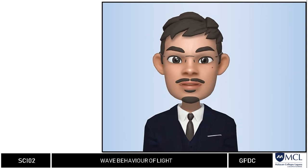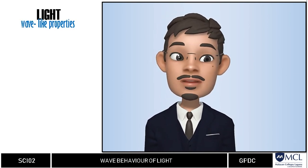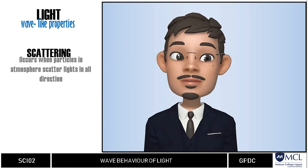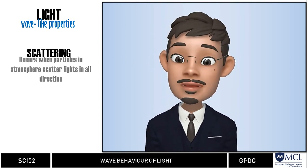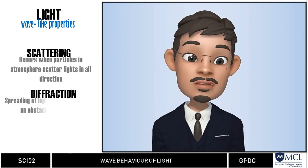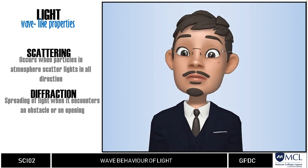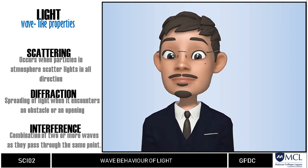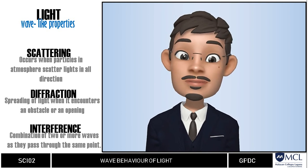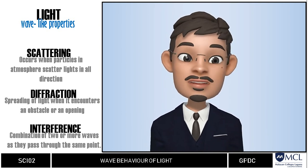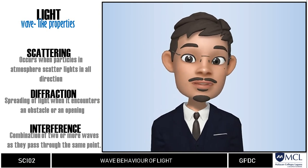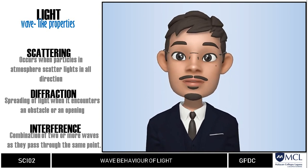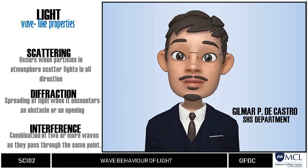To sum up this video, we know that there are three behaviors of light that suggest its wave-like property. We have scattering, which occurs when particles such as those in the atmosphere absorb light and scatter them in all directions. Then we have diffraction, or the spreading of light when it encounters an obstacle or an opening. And interference, which is the combination of two or more waves into one wave whenever they pass through the same point. Reflection, refraction, scattering, diffraction, and interference suggest a dual nature of light — as particle and as wave — which we will discuss in the next video. Once again, this is Gilmar DeCastro, and see you in the next video.